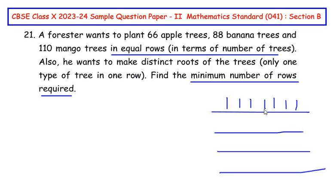So when we are talking about maximum number of trees, we are talking about the highest common factor of 66, 88 and 110.